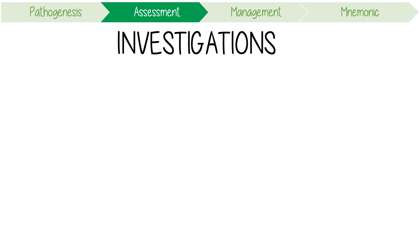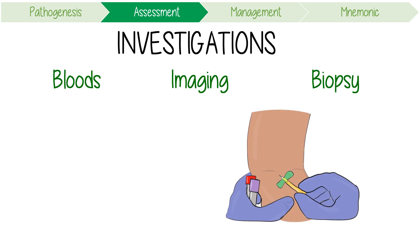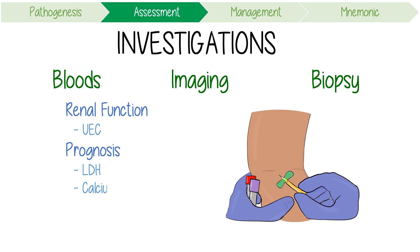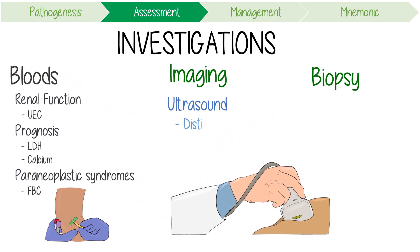For investigations, consider bloods, imaging, and biopsy. Blood tests can help assess renal function like UECs, assess prognosis like lactate dehydrogenase and calcium levels, and detect paraneoplastic syndromes by checking for haemoglobin in the full blood count. Imaging can include ultrasound, which can reliably distinguish simple benign cysts from solid masses most likely to be tumours, and can demonstrate tumour thrombosis in the inferior vena cava.